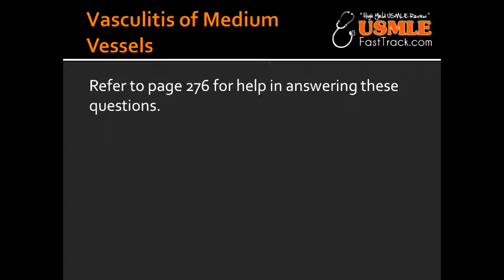What are some of the complications that can arise from Kawasaki disease? Complications include coronary aneurysms that can lead to an MI or even aneurysm rupture. The treatment of Kawasaki disease is IV immunoglobulins and aspirin.